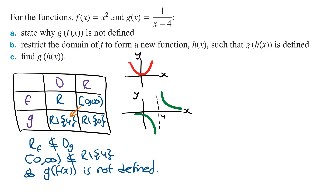Part (b): Restrict the domain of f to form a new function h(x) such that g∘h(x) is defined. The domain of g is all real numbers except for 4. So if we restrict the domain of f so that its range is from 0 to infinity, not including 4, then the range of f will be a subset of the domain of g.